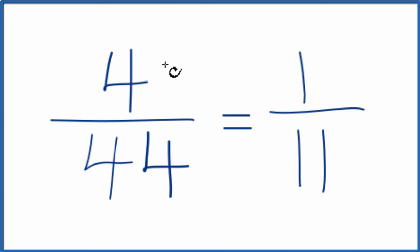So we've simplified the fraction 4 over 44, 4/44, down to 1/11. These are equivalent fractions. If you divide 4 by 44 and 1 by 11, you're going to get the same value.